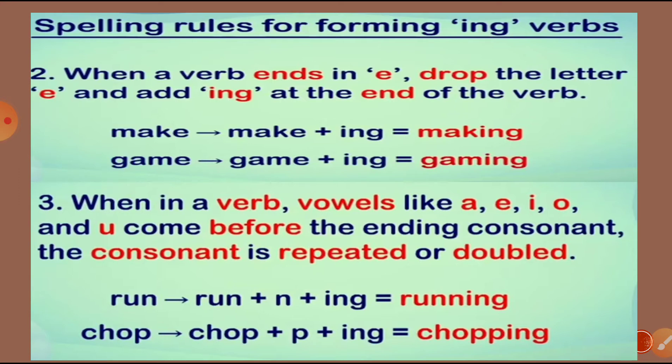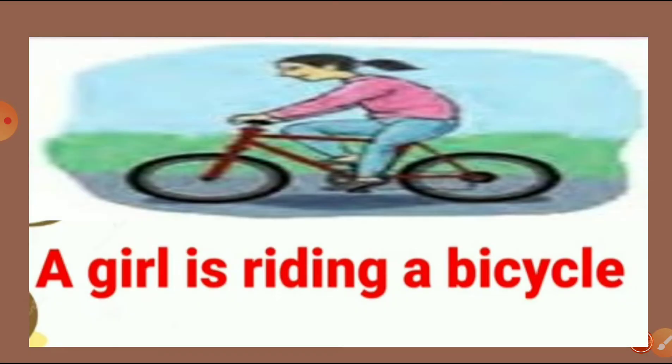When the base form of a verb ends in E, we delete the E when forming the ING form of the verb. For example, what are you doing? The answer is: I am writing a letter. So let's start.